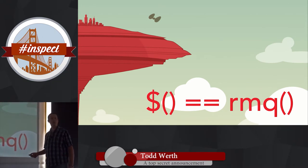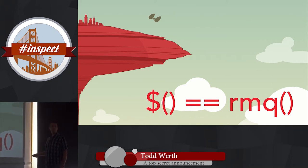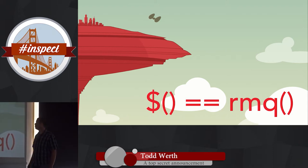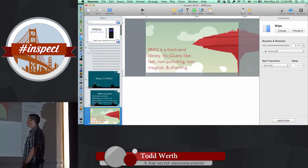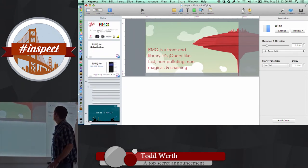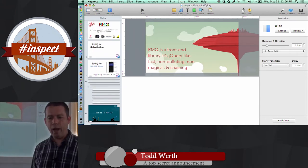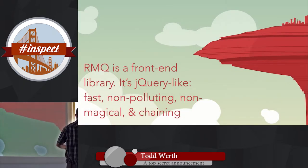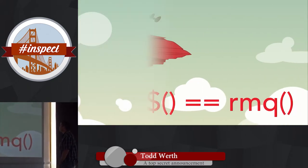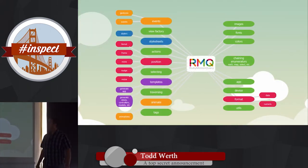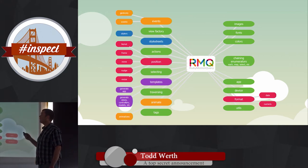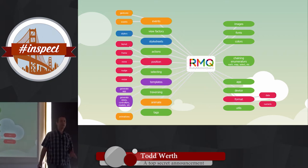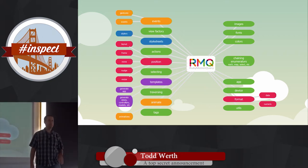Just like jQuery where you wrap your elements, in RMQ we wrap our elements similarly. RMQ is a front-end library — it does a lot of things but only has to do with the front-end. There's no data, no HTTP, nothing like that — it's all UI views and view controllers.